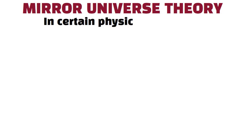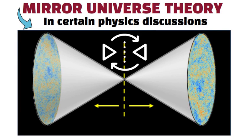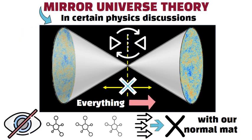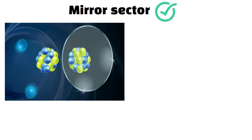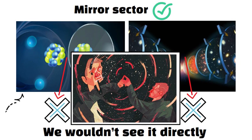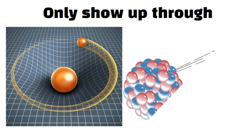Mirror Universe Theory. In certain physics discussions, a mirror universe is one where each particle in our standard model has a corresponding mirror partner. This doesn't mean everything is literally reversed left to right. It might mean there's a hidden set of particles and forces that almost never interact with our normal matter. If this mirror sector exists, it could contain mirror atoms, mirror stars, or even mirror life. We wouldn't see it directly because mirror particles wouldn't glow or reflect light in our electromagnetic spectrum. They might only show up through gravity or other very weak interactions.